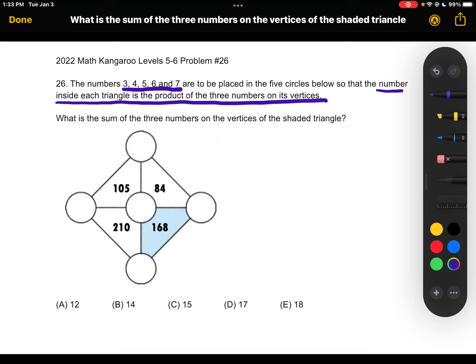It might be a good idea to start with the number 5, because we know that multiples of 5 will end in either a 5 or a 0, and we see that 105 and 210 are both multiples of 5, but 84 and 168 are not.